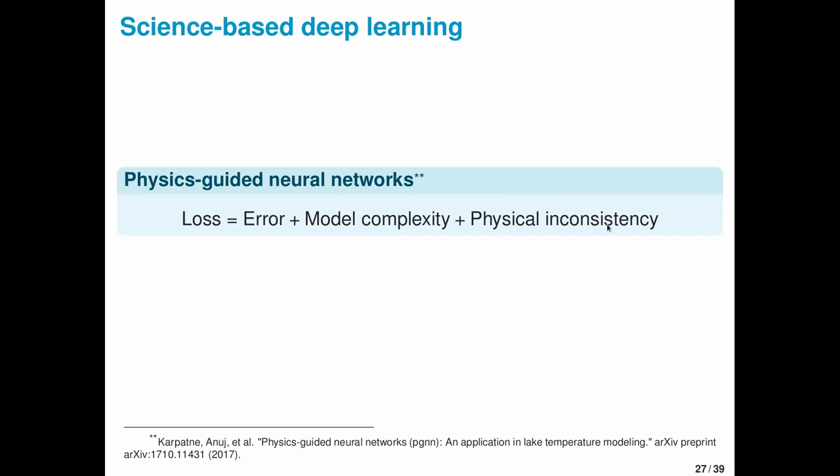And the third is a penalty for physical inconsistency: how far have you deviated from the constraints or predictions of a science-based model? For instance, how far off was the model from mass balance in its predictions? The nice thing about using a loss function like this is you can train a model that both fits the data well, is parsimonious, and is consistent with known physics.